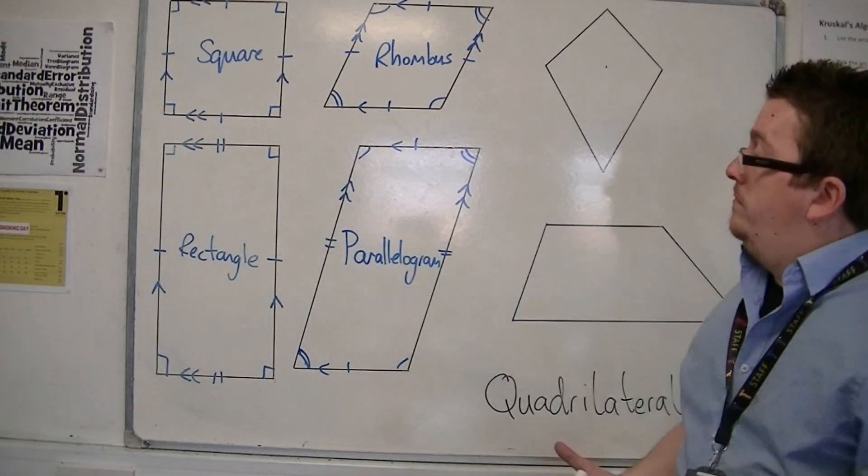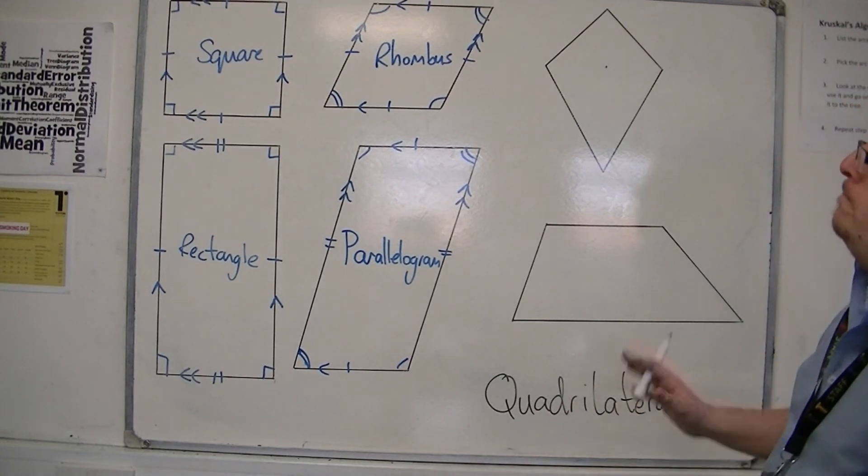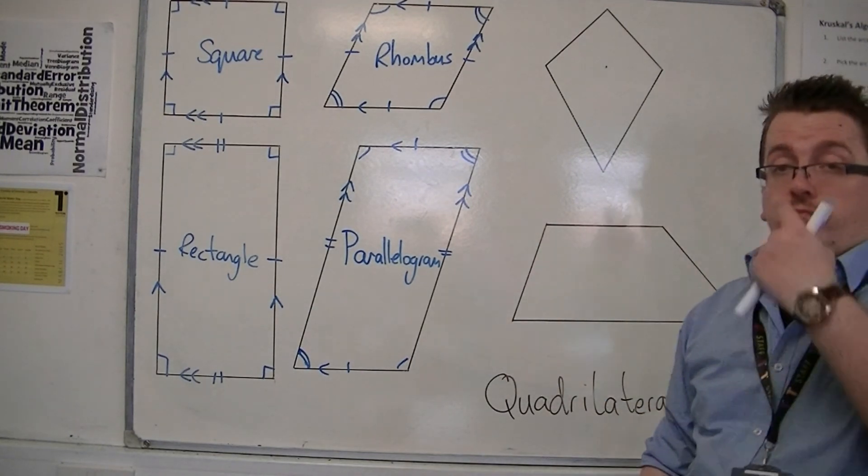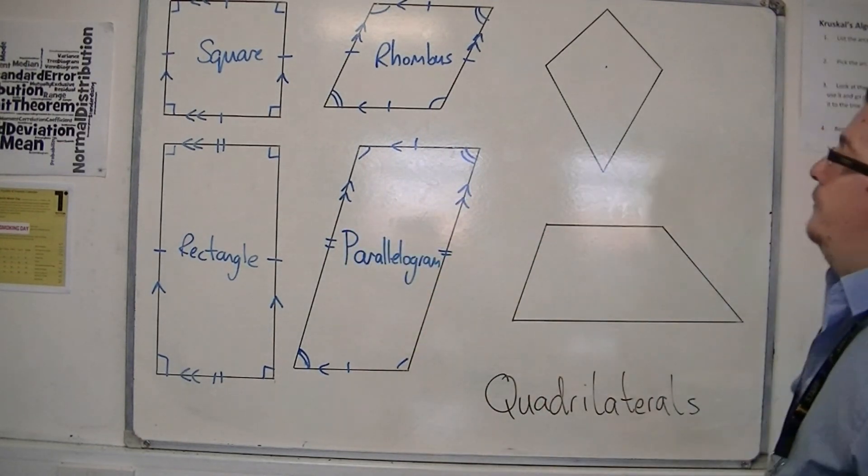Lines of symmetry, it doesn't have any. Order of rotation, two. So it can shift round and be on itself.